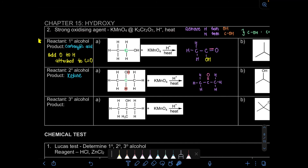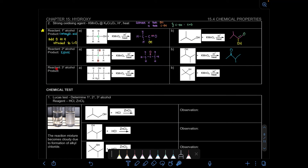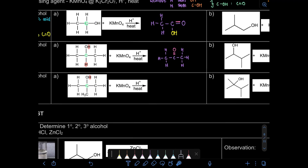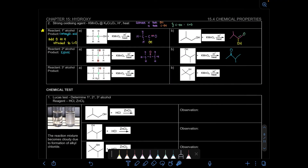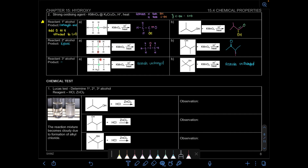For strong oxidizing agent, the different product is only for primary alcohol. Secondary alcohol maintains the same product — ketone — because there's no hydrogen on the C double bond O to add oxygen to. For the skeletal structure, we just change COH to C double bond O. For tertiary alcohol, there's no hydrogen attached to the carbonyl carbon, so this reaction will not occur — remain unchanged.